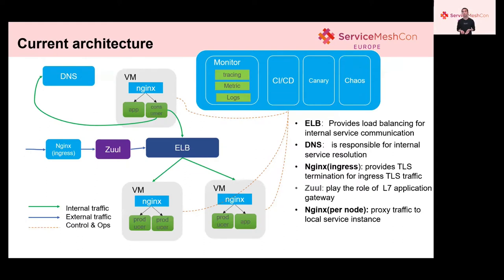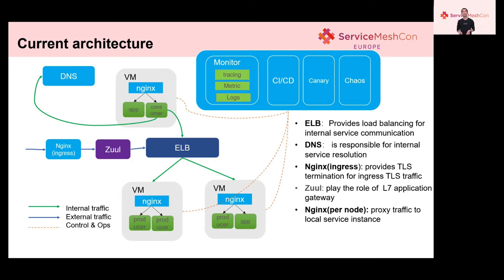This is the current architecture a customer IT engineer described to us. They use a popular microservice framework from several years ago. In fact, they are all microservice platforms based on DNS, ELB, and NGX, providing service discovery as an independent platform rather than embedded in the application. The total architecture greatly depends on the central ELB and NGX, which provide load balancing for internal service communication. DNS is responsible for internal service resolution. Ingress NGX provides TLS communication for TLS traffic. And Zoom plays the role of L7 application gateway. NGX on each node provides traffic routing to local service instances.